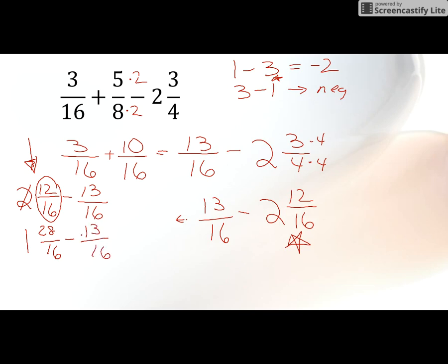So now I'll do 1 minus, well nothing, 1 minus 0 is 1. 28 minus 13 is 15. So our final answer is 1 and 15 16ths.